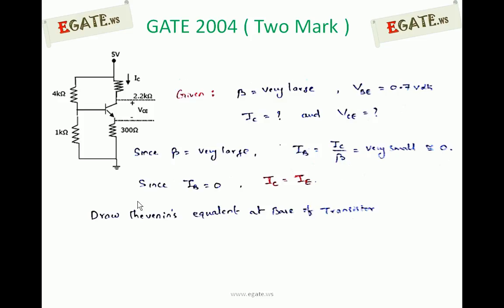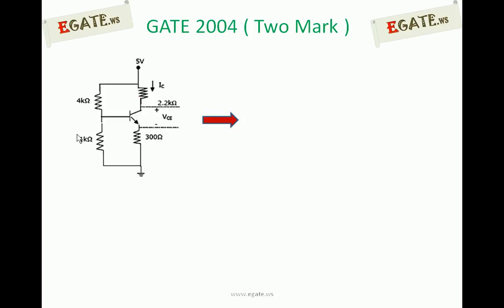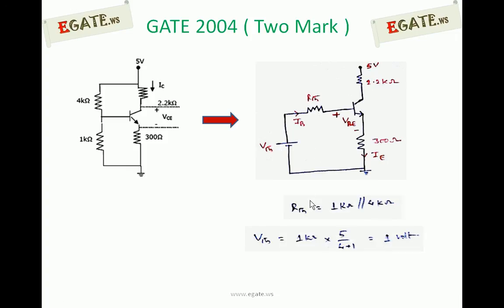So since it is self-biased, first you have to draw the Thevenin's equivalent at the base side. Base side circuit diagram is going to be replaced with Thevenin's equivalent - that is Thevenin's voltage with Thevenin's resistor circuit. This is the circuit. Simply the base side has been replaced with Thevenin's voltage and Thevenin's resistance. RTH is nothing but R1 parallel R2, that is 4kΩ parallel 1kΩ, so it is equal to 1kΩ parallel 4kΩ.